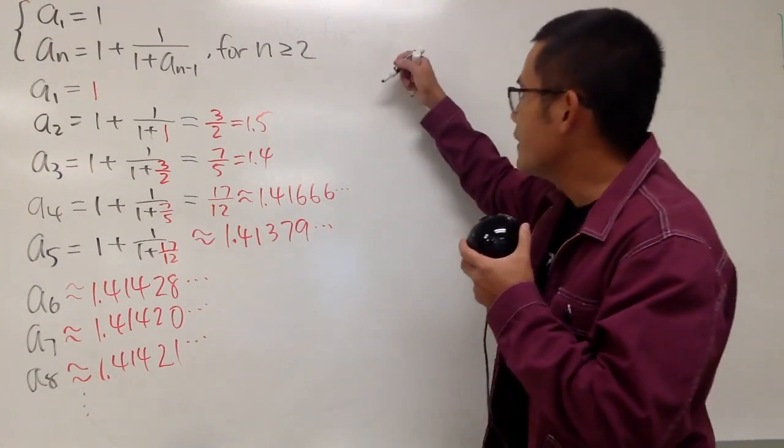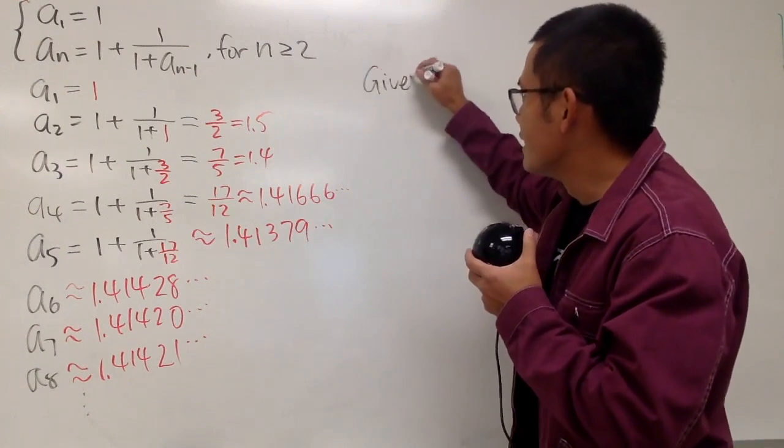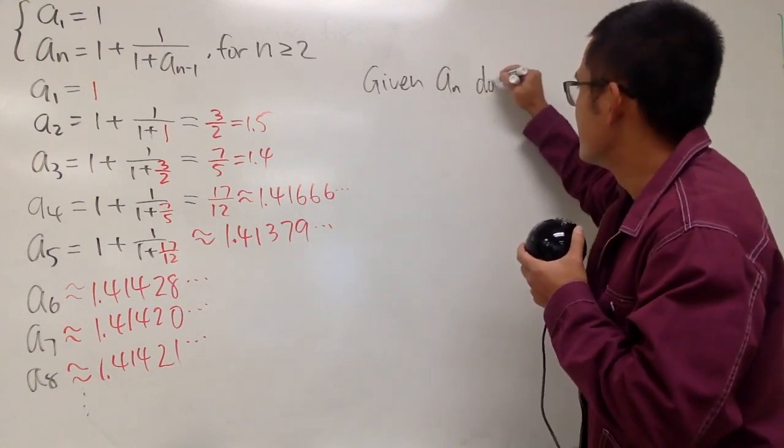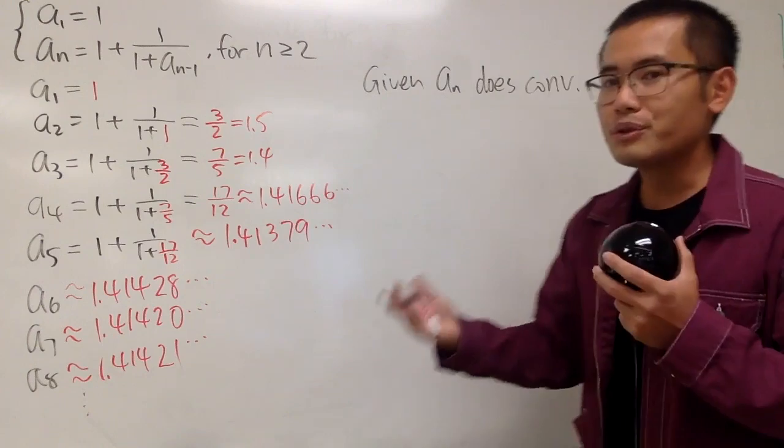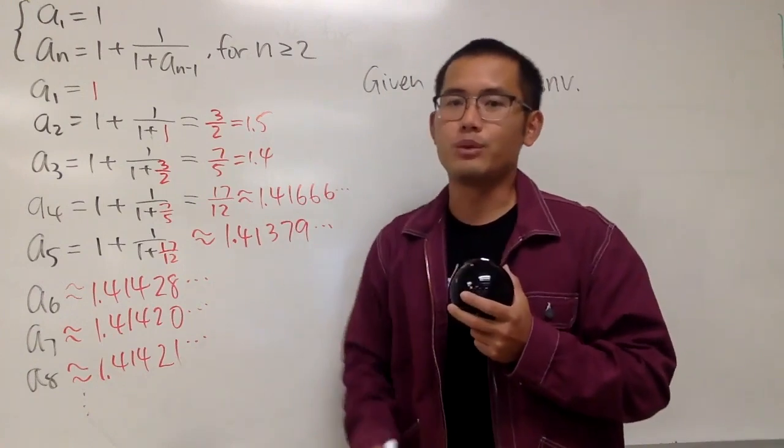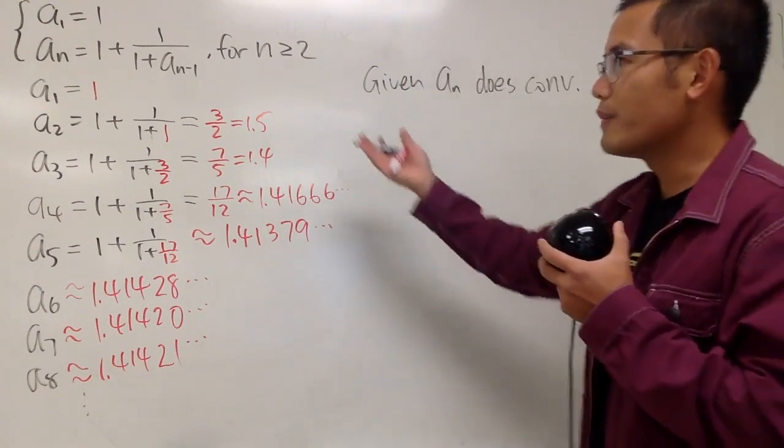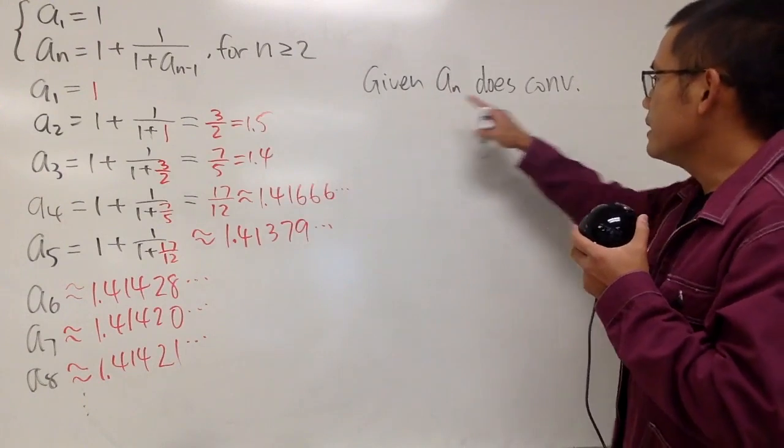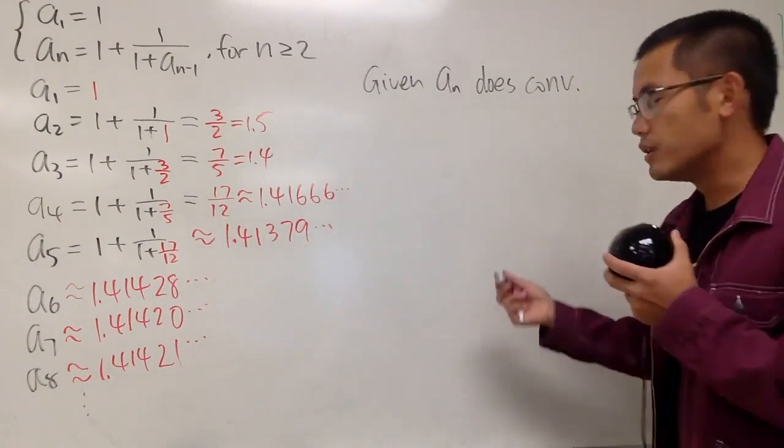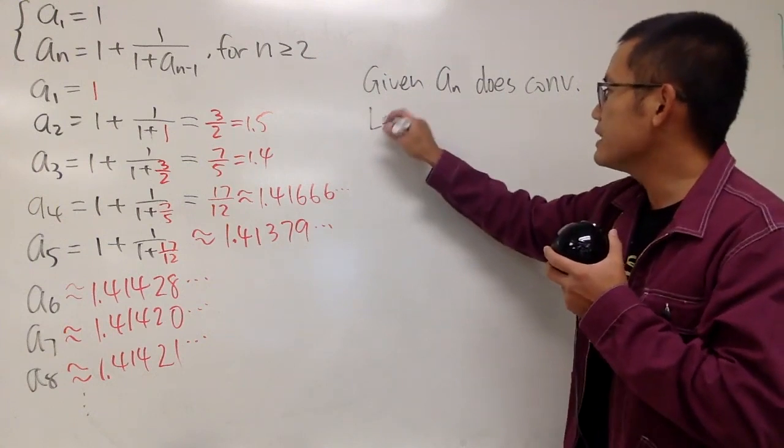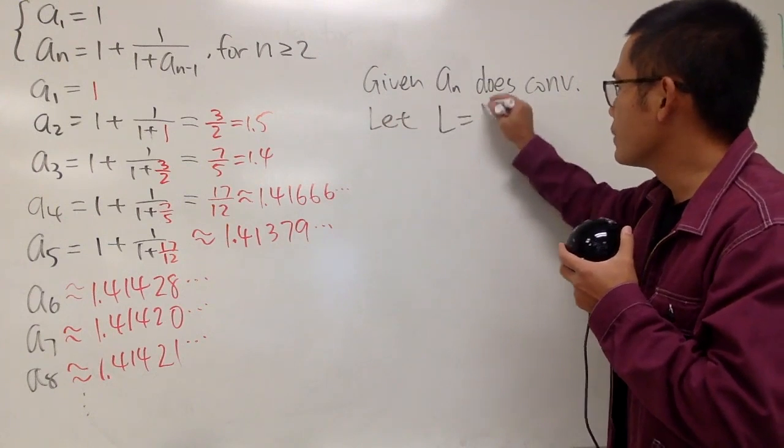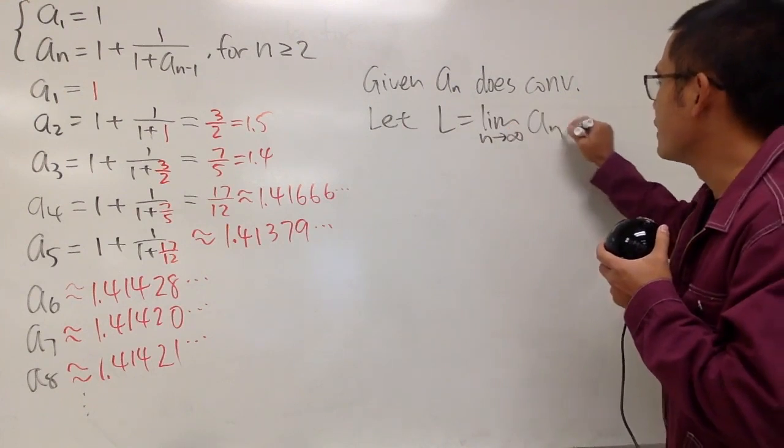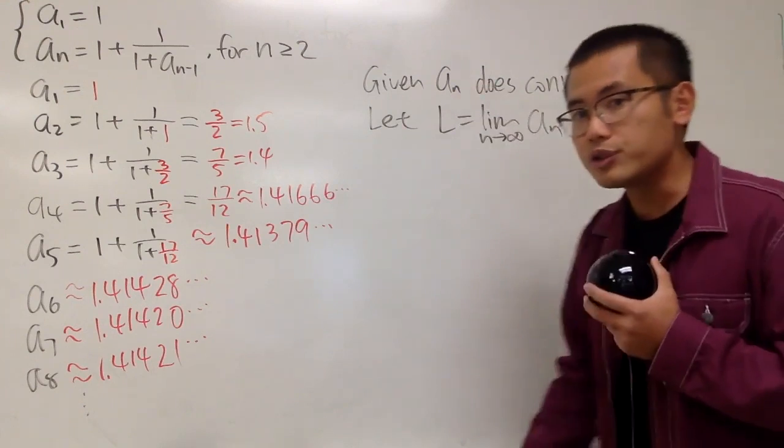I will tell you guys that given, which I actually gave you guys this scenario, given aₙ does converge, so you know in the end, you actually end up with a finite result, right? Now, we're going to find out what the limit of aₙ is. This is how. Given this right here does converge, so I will just say, let L equal to the limit as n goes to infinity of aₙ, because of course aₙ does converge.